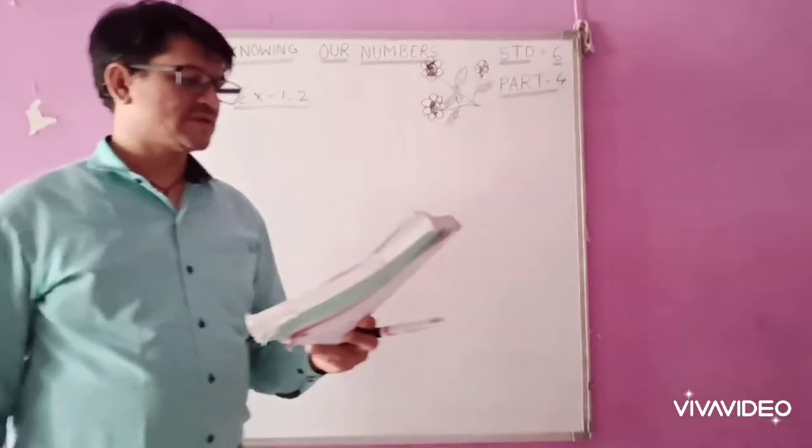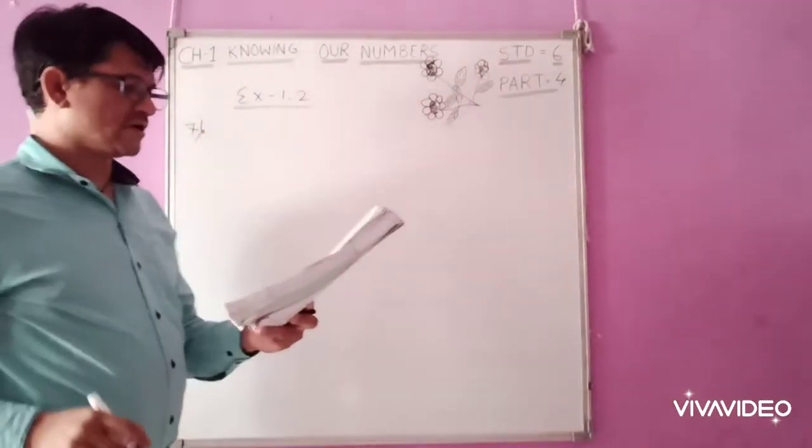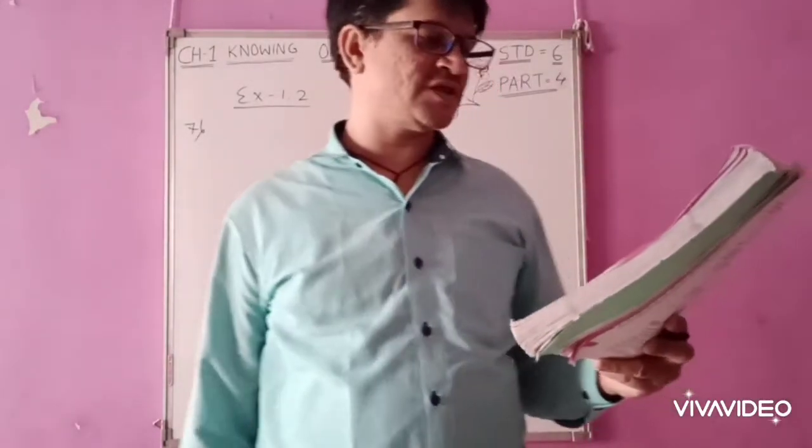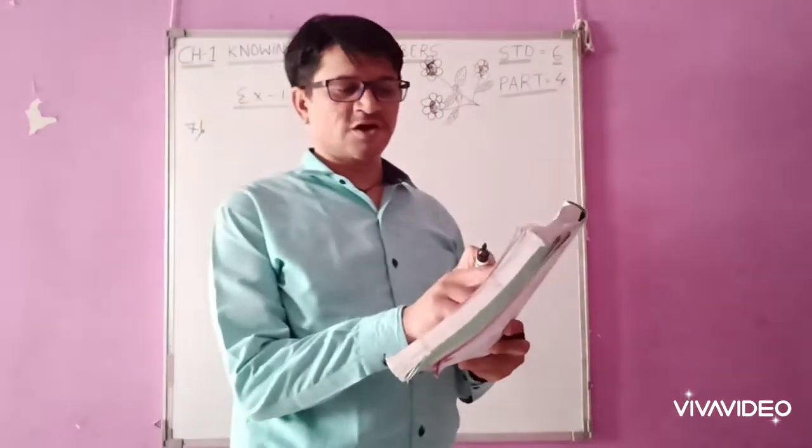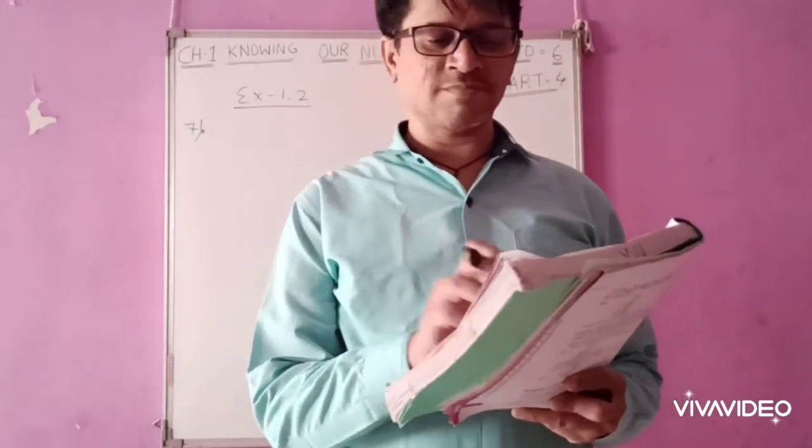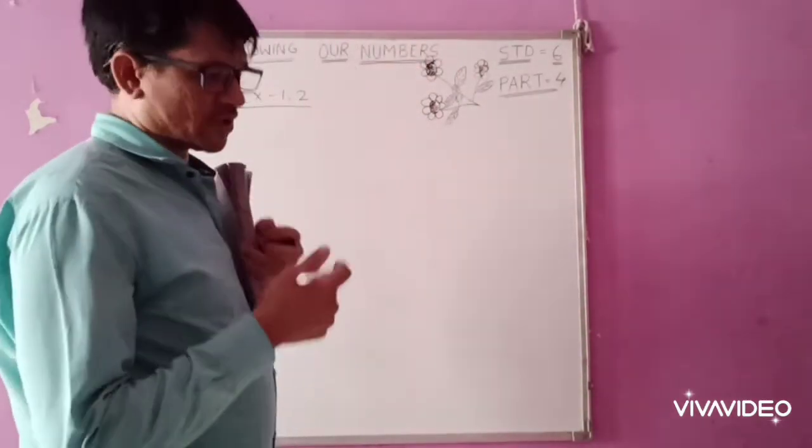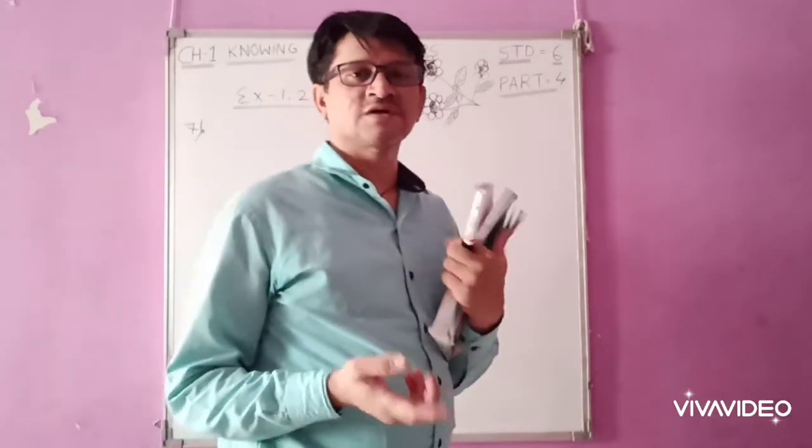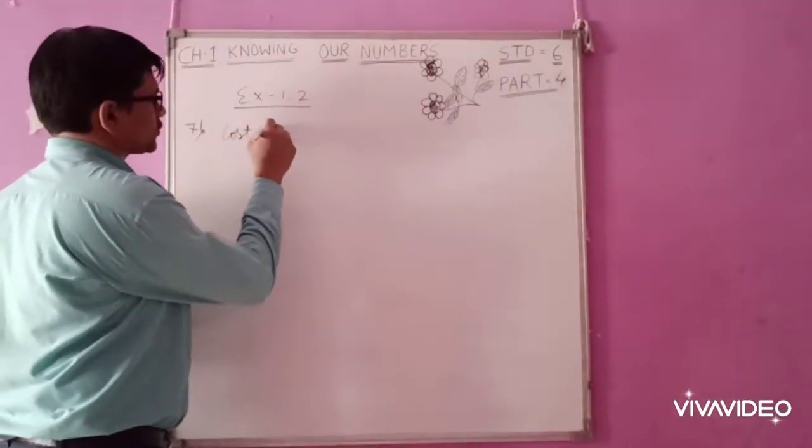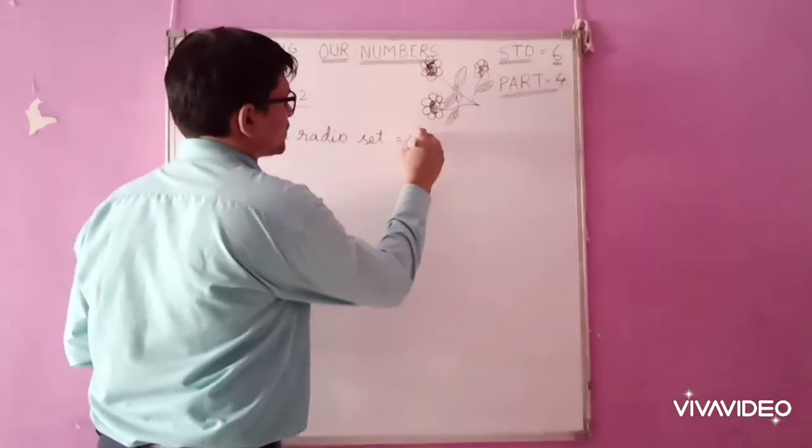Now, we will be moving to problem number 7. Here, a merchant had Rs. 78,592 with her. She placed an order for purchasing 40 radio sets at Rs. 1200 each. How much money will remain with her after the purchase? First, you find the cost of total 40 radio sets. One radio set is given for you. So first, we will be writing cost of a radio set. That will be Rs. 1200.